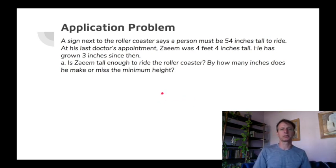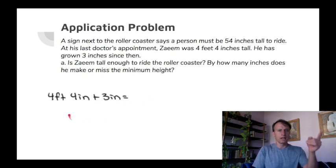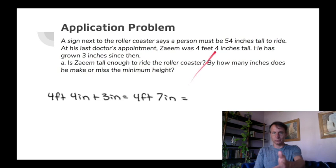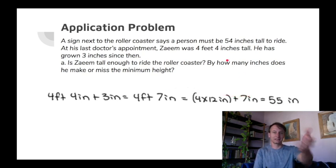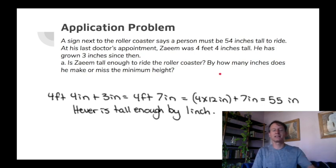Let's answer that. He's 4 feet 4 inches plus the 3 inches makes him 4 feet 7 inches, right? Now we need to compare it to inches, so 4 feet is how many inches? It's 4 times 12: 12, 24, 36, 48, plus 7 is 55. So he's 55 inches tall. By how many inches does he make it? He's an inch taller than he needs to be. He can take his shoes off and still make it on!